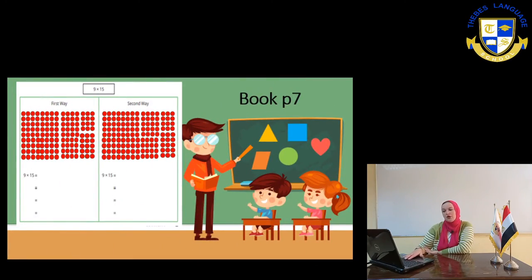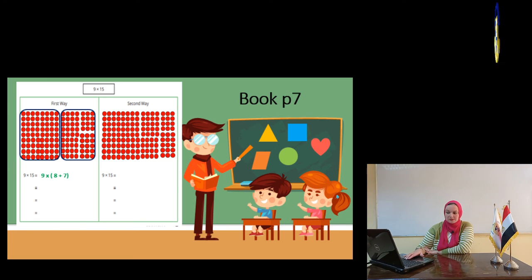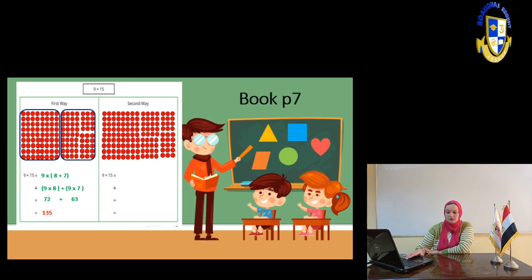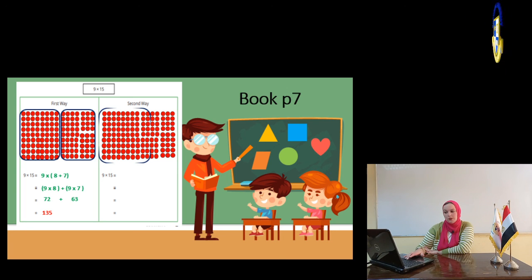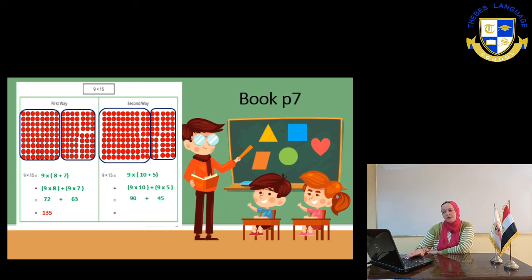We have 9 times 15. We are going to split the 15 into 8 plus 7. So we make 9 times 8 plus 9 times 7. The result will be 72 plus 63, and adding them together gives 135. In the second way, we split 15 into 10 plus 5. So we make 9 times 10 plus 9 times 5. The result will be 90 plus 45, which also equals 135.